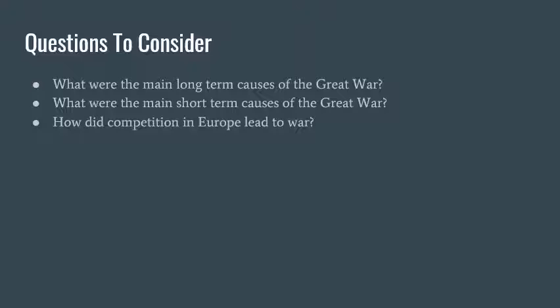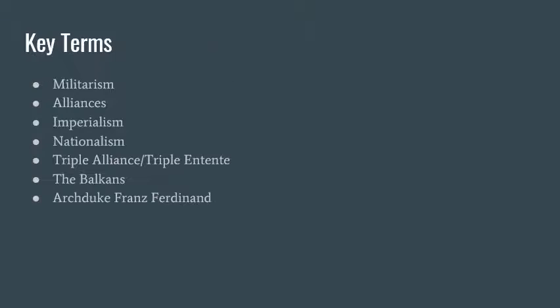Throughout this video, you're going to hear me say the Great War and World War I. They're the same thing. It's just that at the time it was called the Great War because they didn't know this was the First World War until after World War II. The key terms you should be able to define are militarism, alliances, imperialism, nationalism, the Triple Alliance and the Triple Entente, the Balkans, and Archduke Franz Ferdinand.